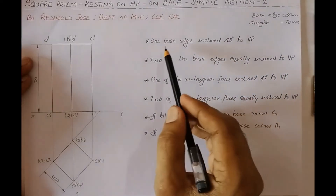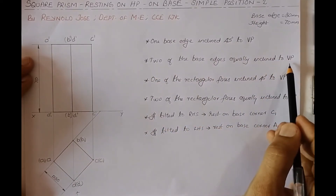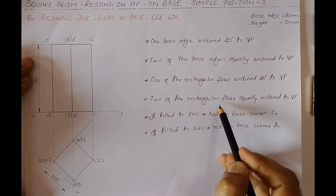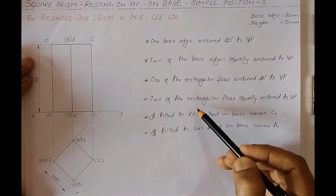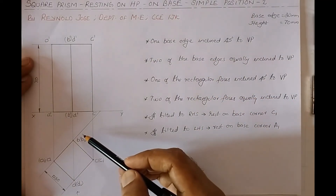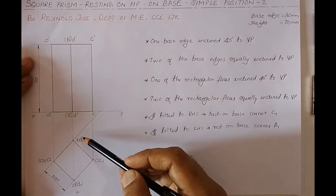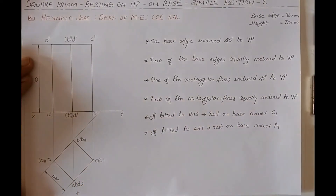You can use this simple position in all four conditions: if one base edge is inclined 45 degrees to VP, if two base edges are equally inclined to VP, if one rectangular face is inclined 45 degrees to VP, or if two rectangular faces are equally inclined to VP. If any of these conditions appear in a problem — including problems where the solid rests on a corner of its base — you can start with this kind of simple position.